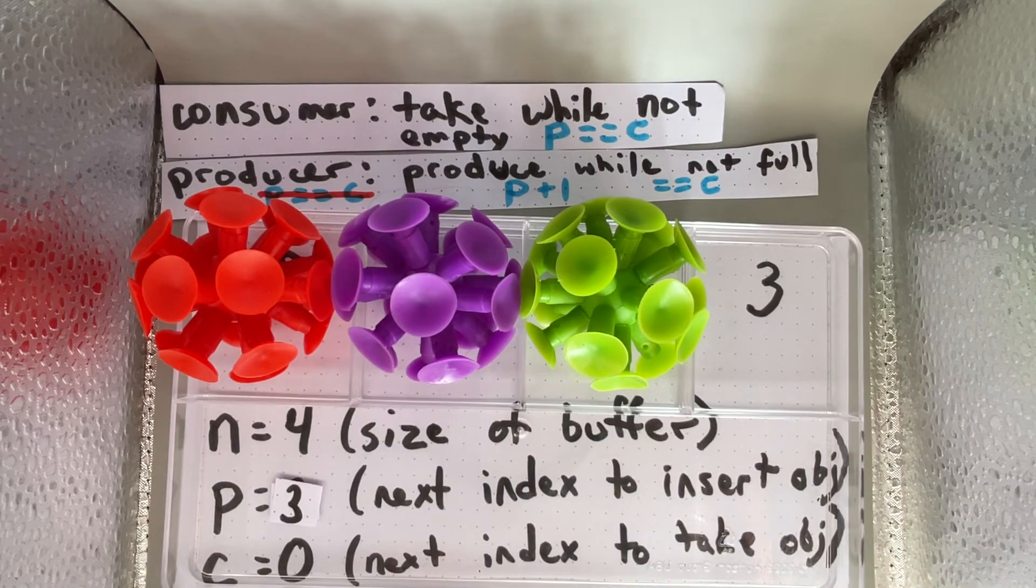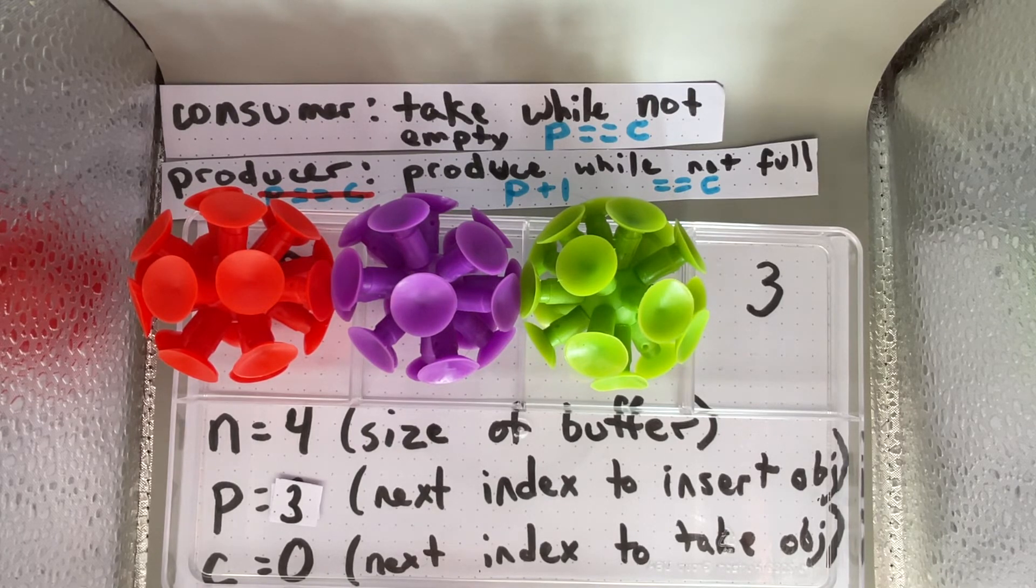According to our definition, p plus one equals c when it's full. So here's the question: is three plus one equal to zero?